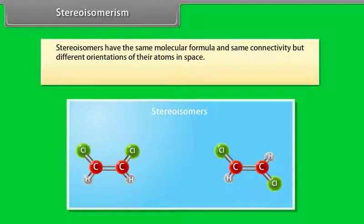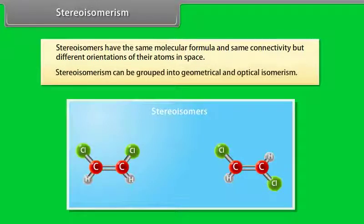Stereo-isomers have the same molecular formula and same connectivity but different orientations of their atoms in space. Stereo-isomerism can be grouped into geometrical and optical-isomerism.